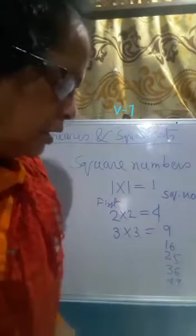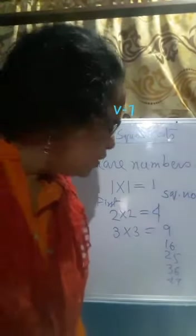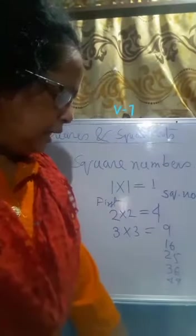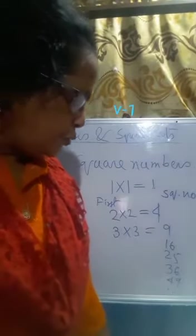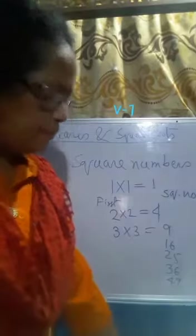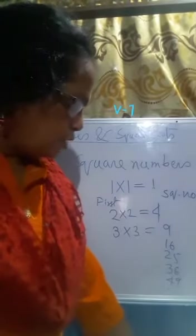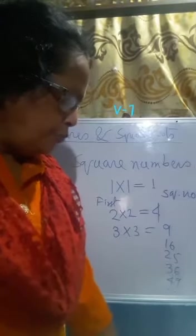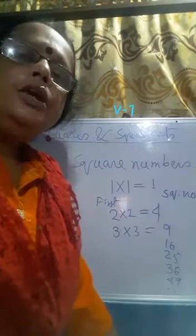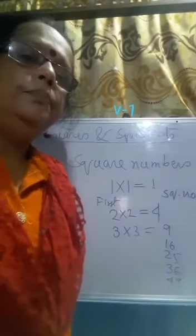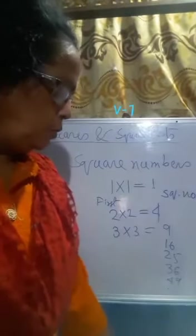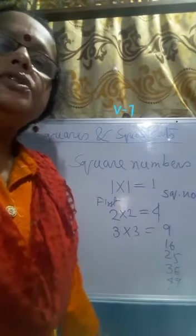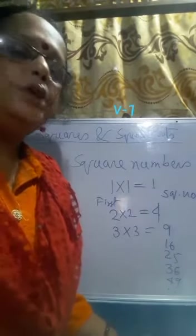In your book, on page number 90, there is a table showing the squares of natural numbers — from 1 squared up to 20 squared. You have to memorize this whole table; otherwise, you will not be able to do anything.